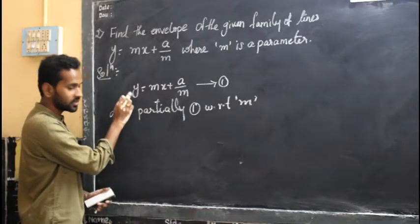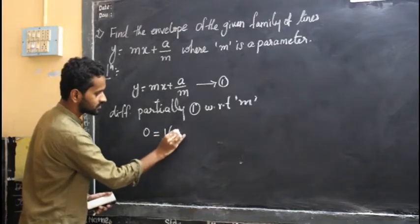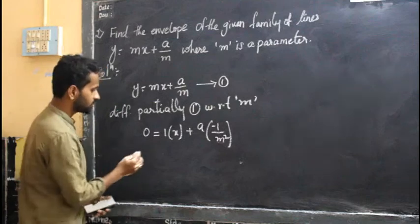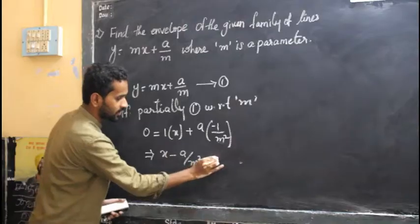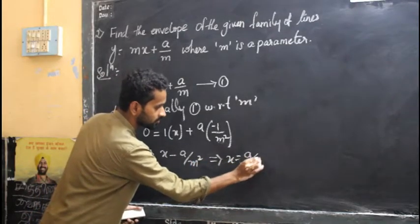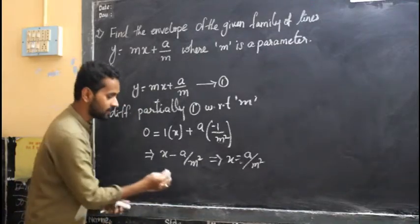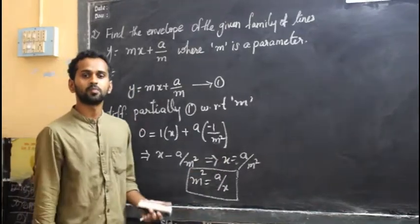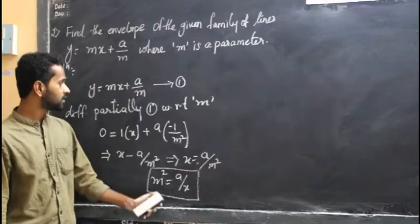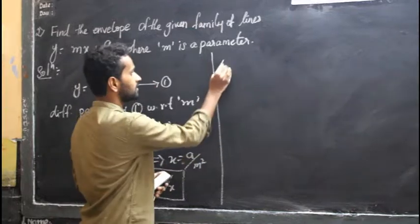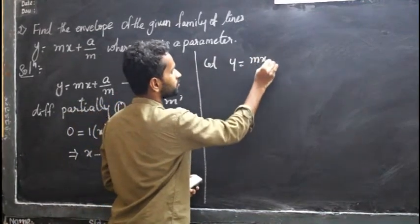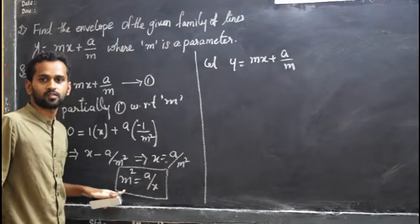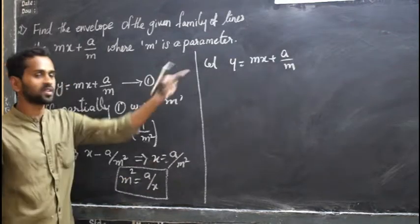Start differentiating equation 1 with respect to m. Differentiation of y partially becomes 0, equal to: m differentiation is 1 times x — x is a constant — plus a is a constant, so differentiation of 1 by m becomes minus 1 by m squared. This gives x minus a by m squared equal to 0, so x equals a by m squared. Writing in standard form: m squared equal to a by x. So I have found m squared equal to a by x.